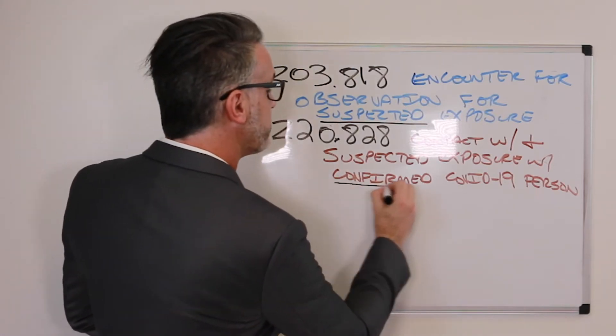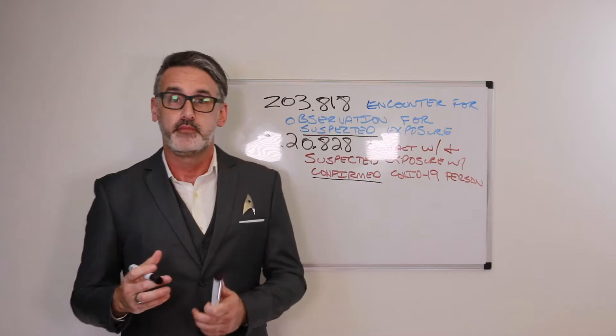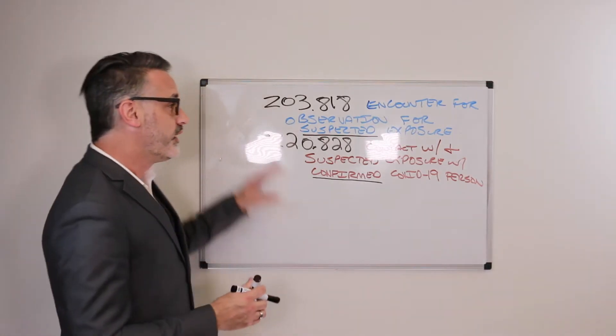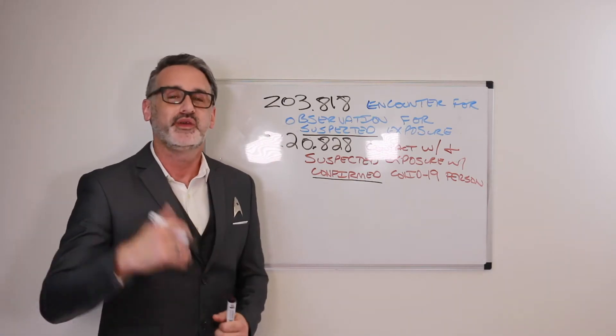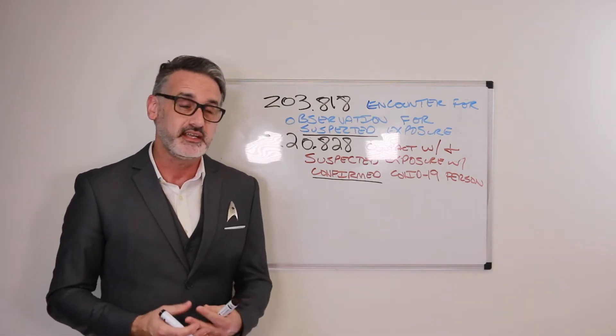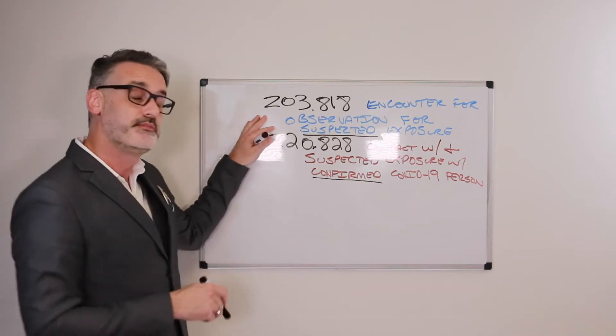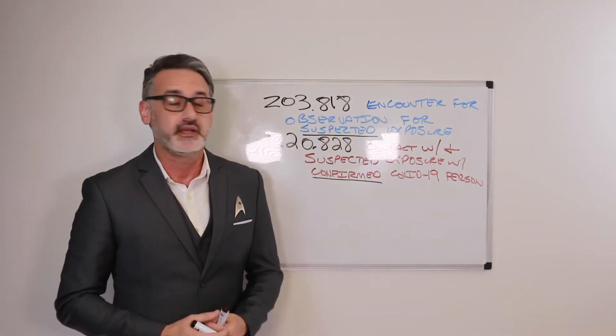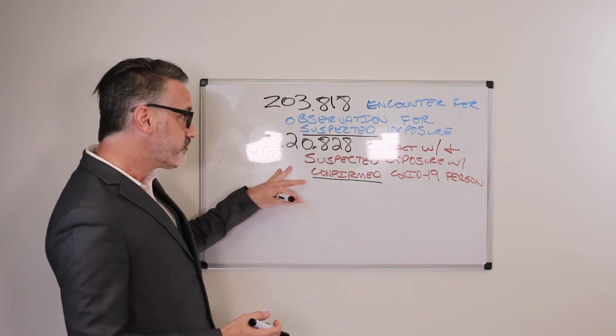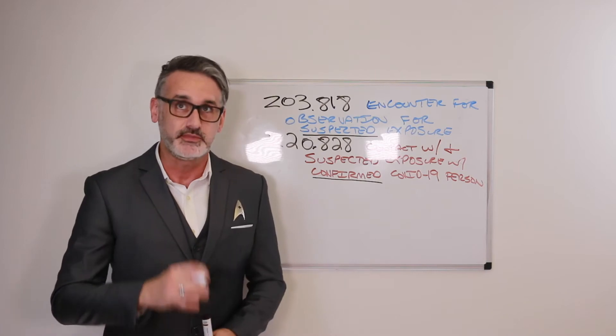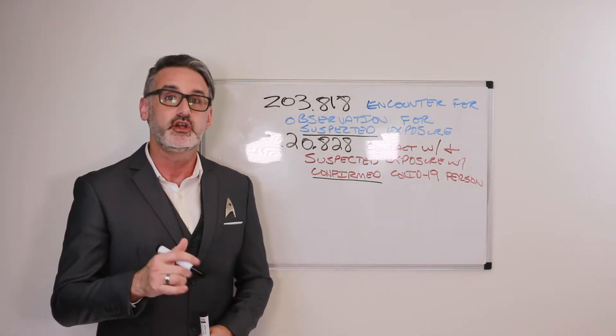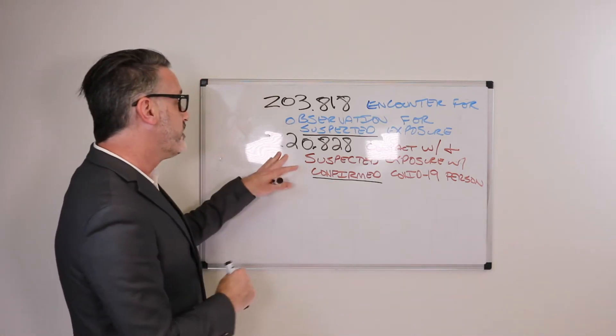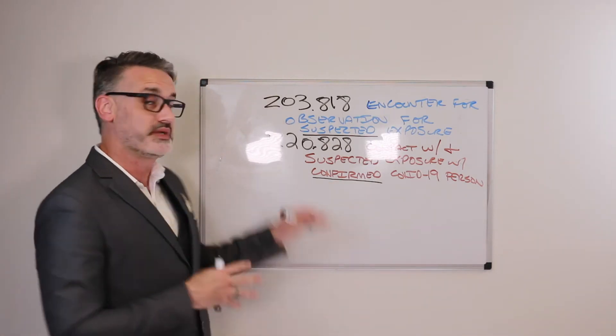So that's the main difference that we have between Z03.818 and Z20.828, where it all depends on based on the contact with the patient. If it's a suspected contact, then we're in the Z03.818. However, if the patient has confirmed 100% yes they came in contact with, and also possible suspected exposure with someone that is a confirmed person that has COVID-19, then we would use the Z20.828 code.